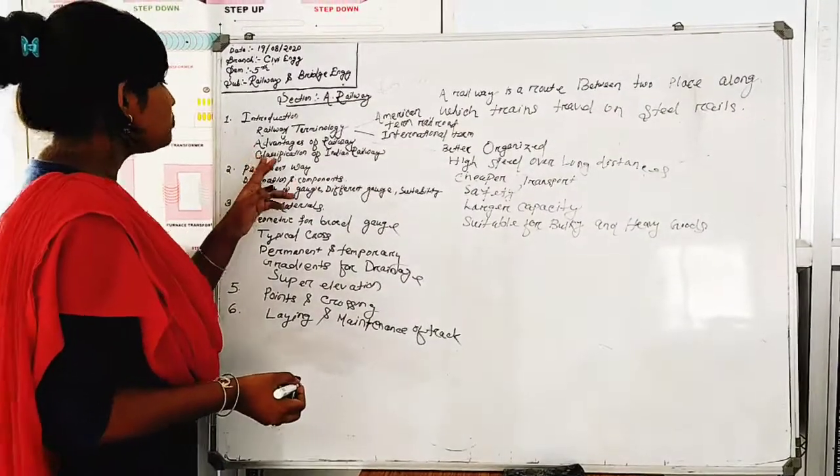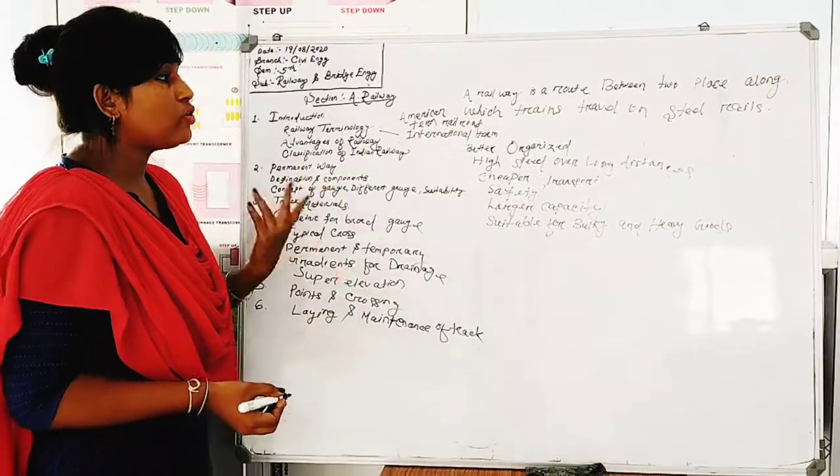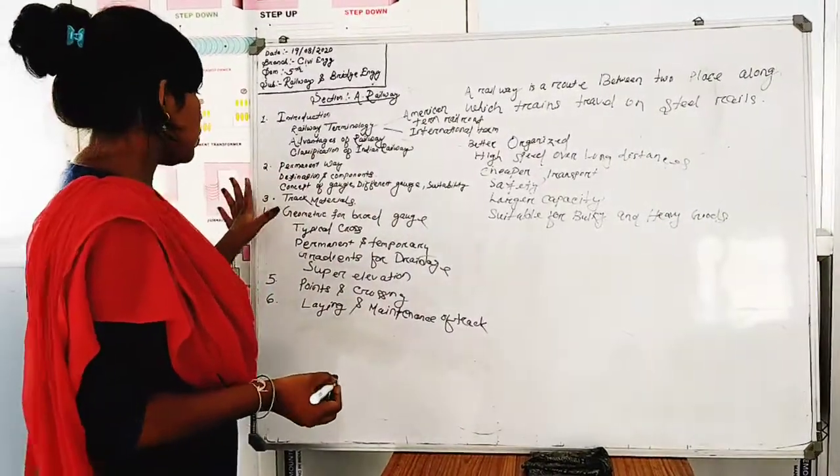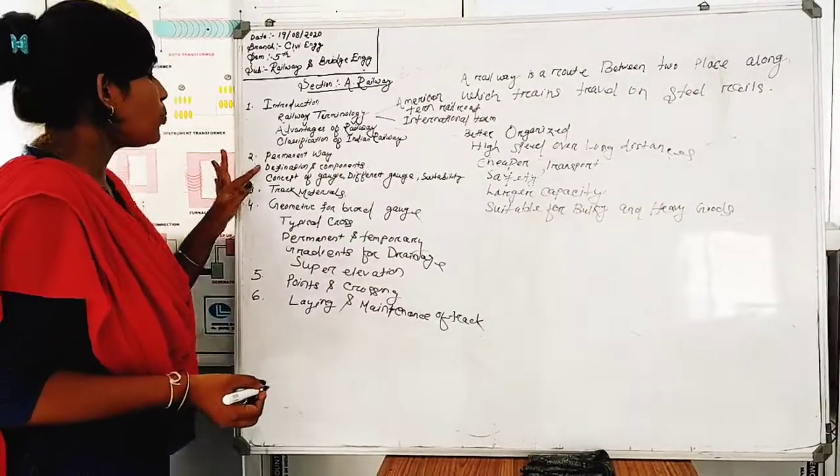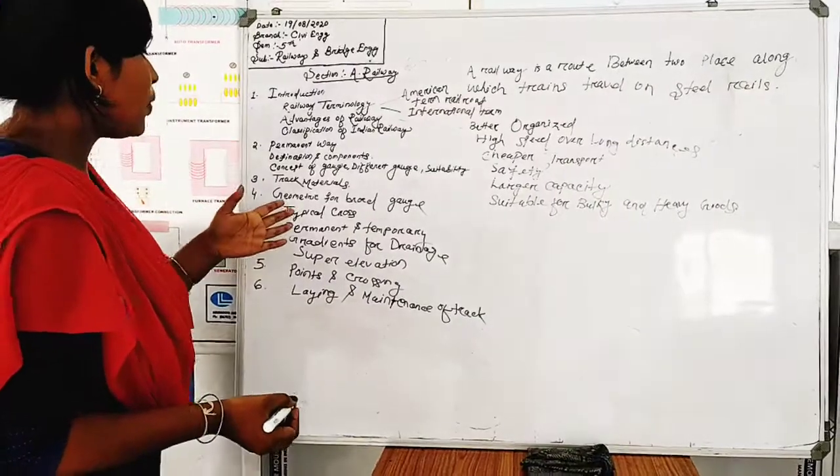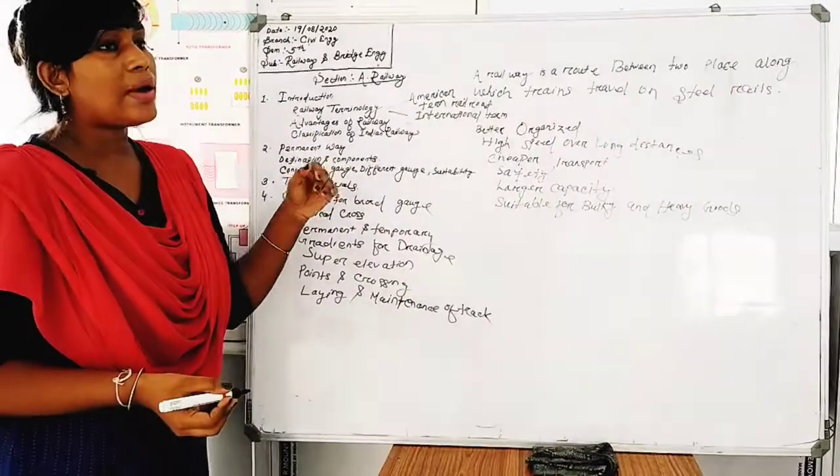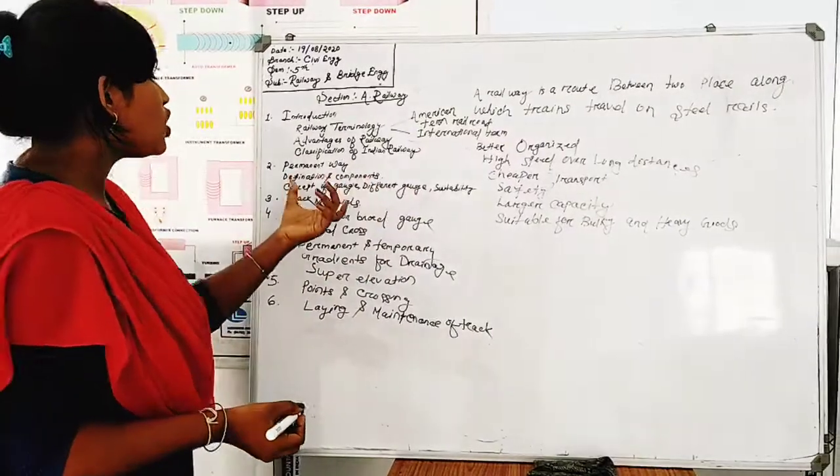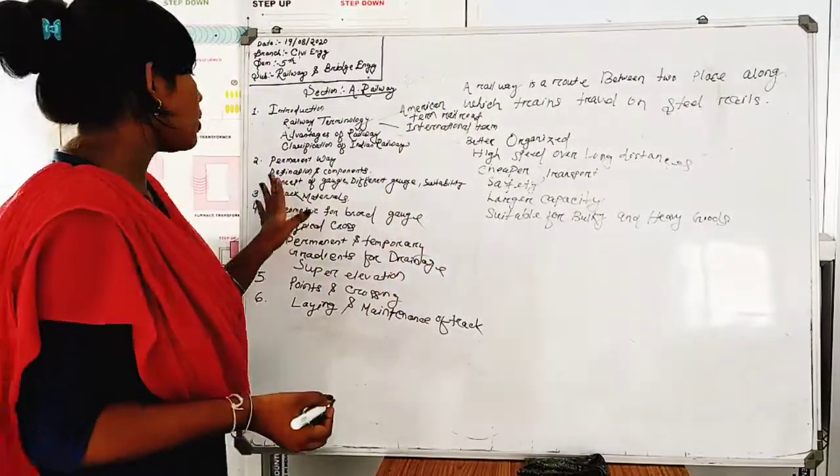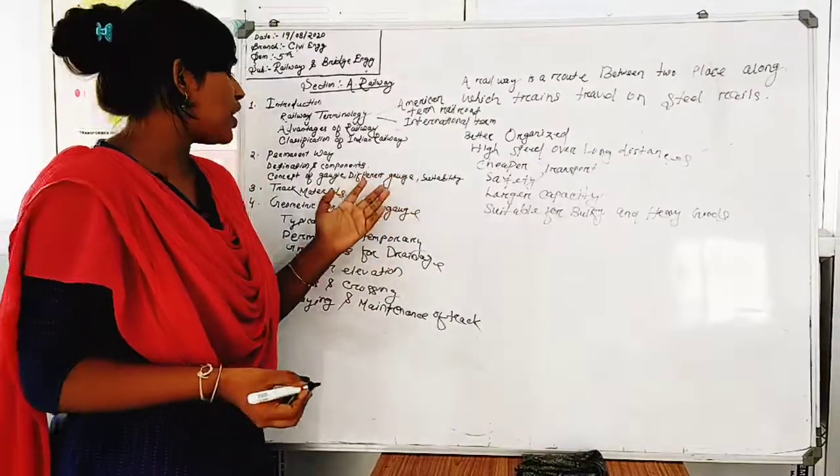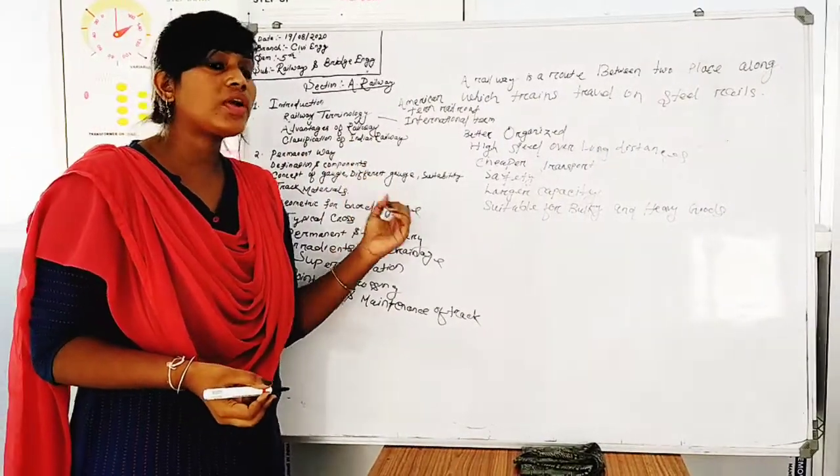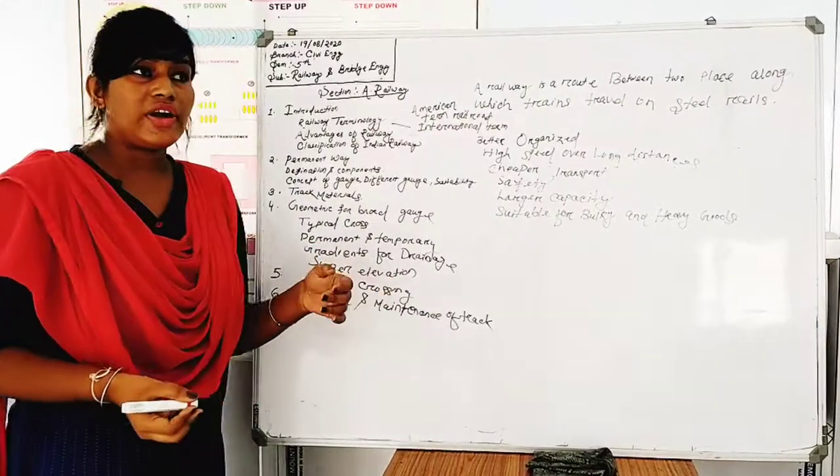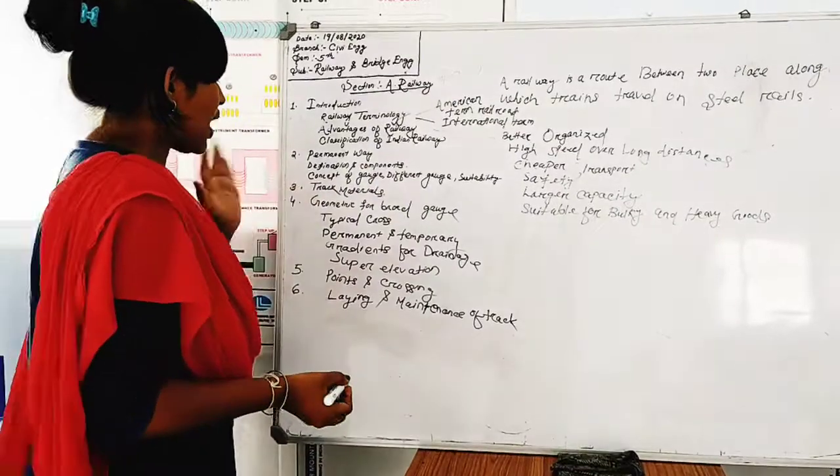Classification in India - we have classifications into different categories. There are components like track materials, ballast, sleepers, and rails that are suitable for railway tracks.